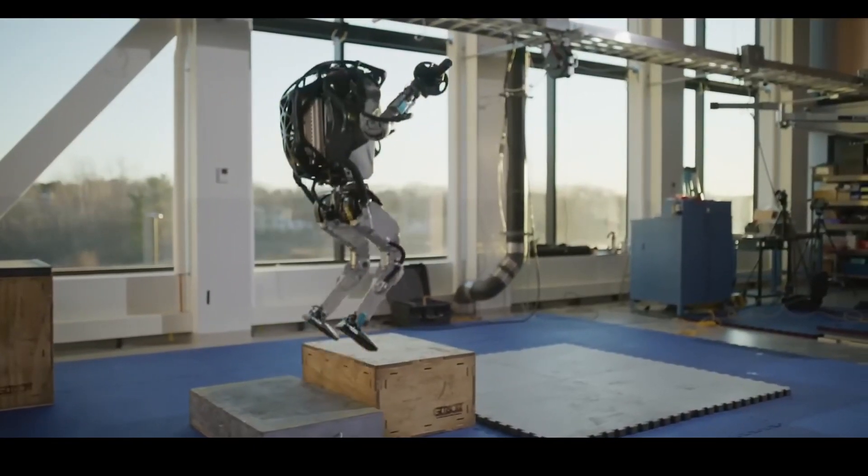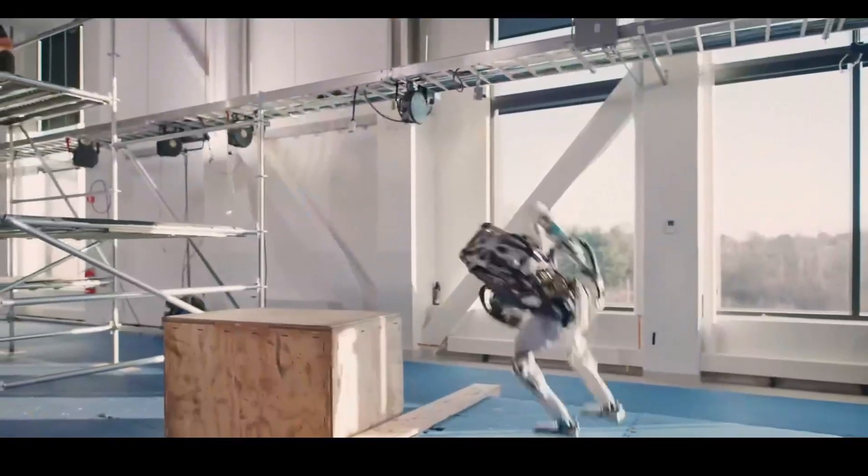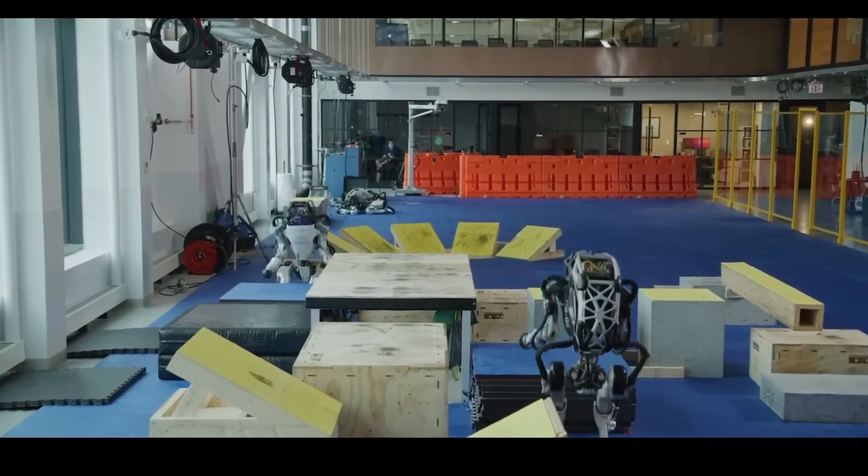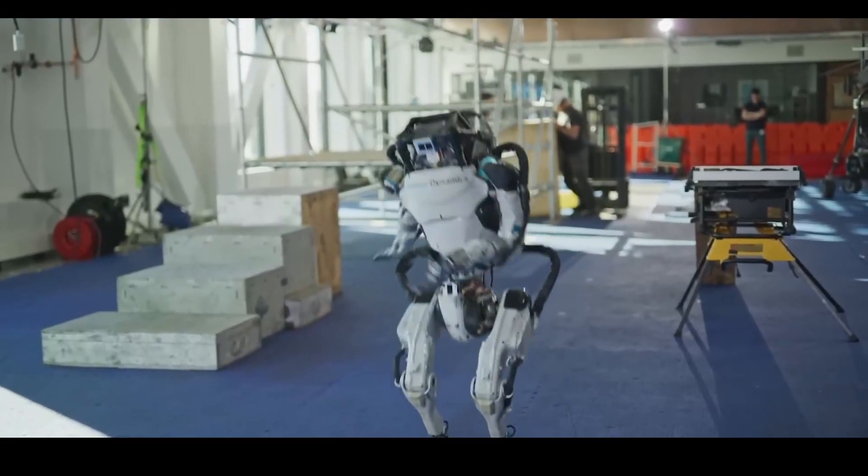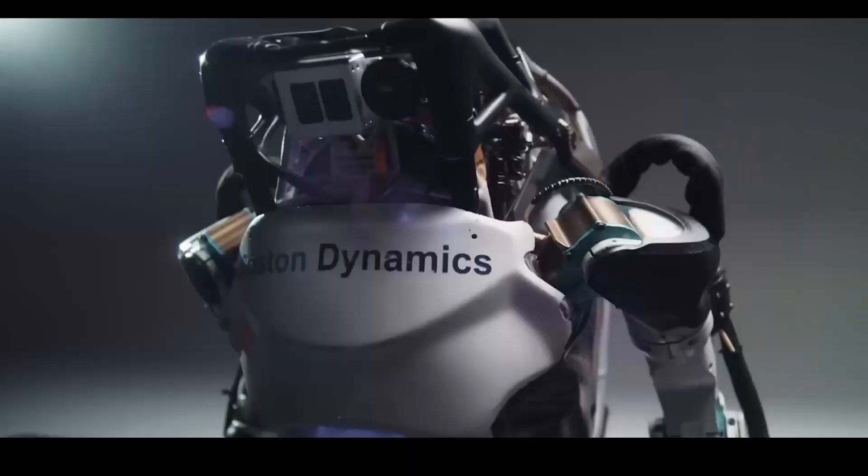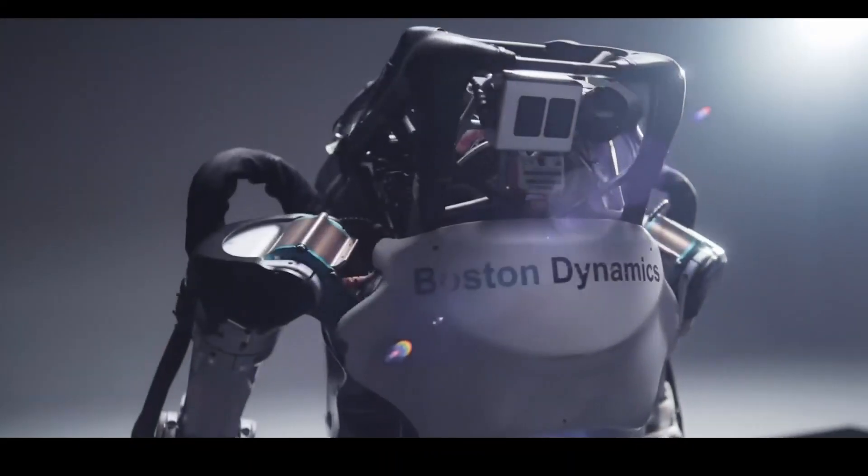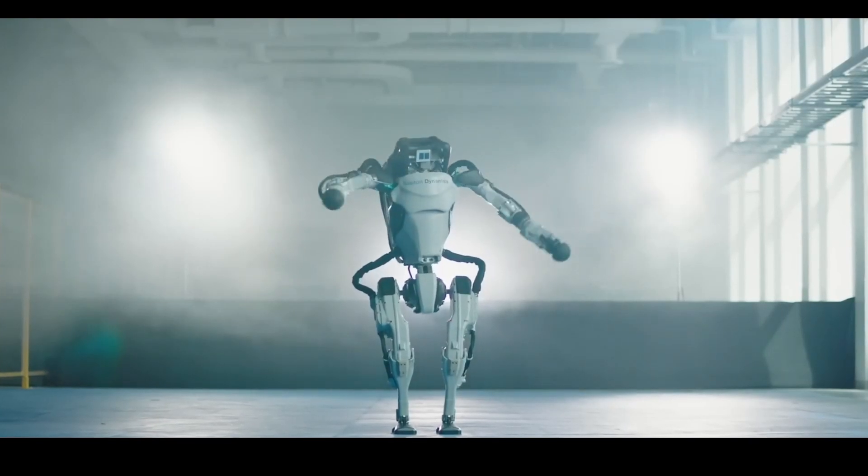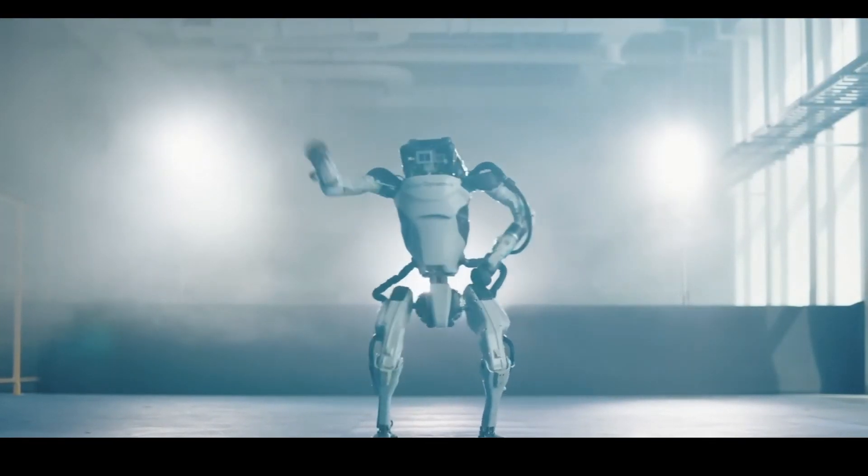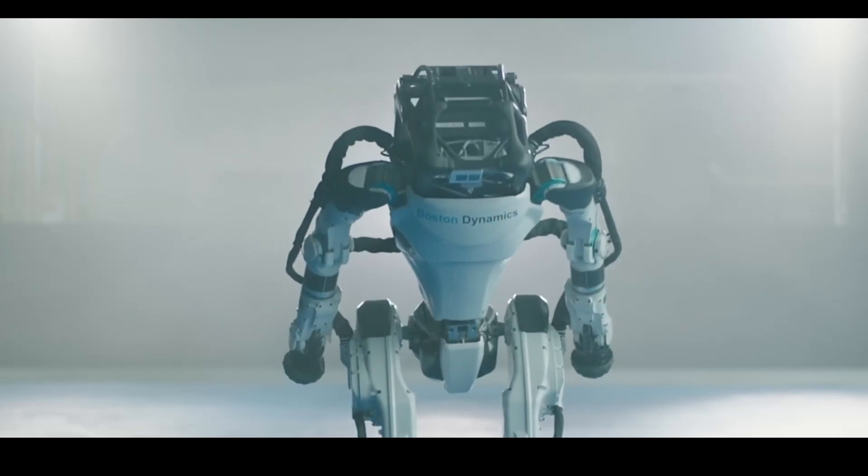But what does this mean in a world where the line between human and machine is increasingly blurred? The concept of the uncanny valley, where humanoid objects that appear almost, but not exactly, like real human beings cause eerie or unsettling feelings, is critical to understanding the public's reaction to such advanced robots.